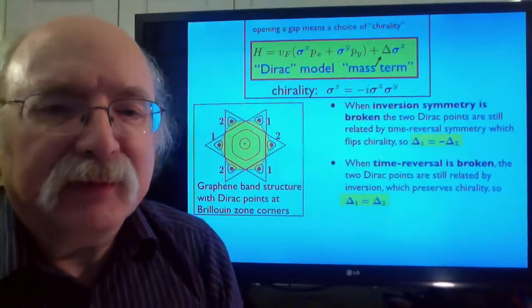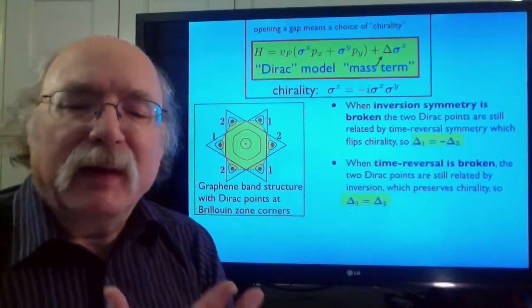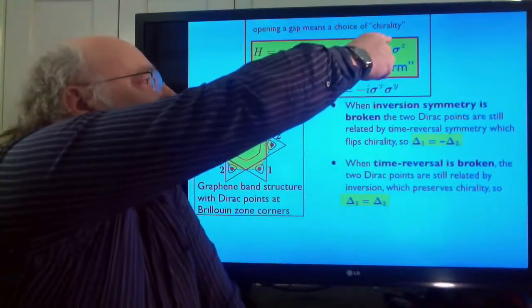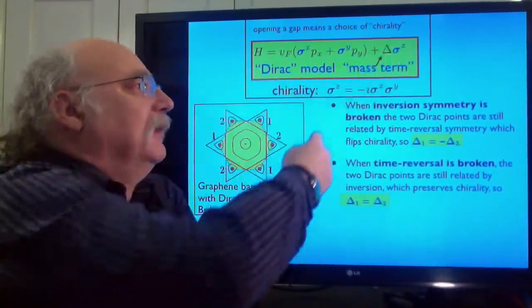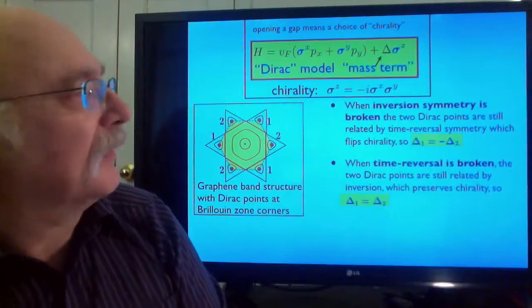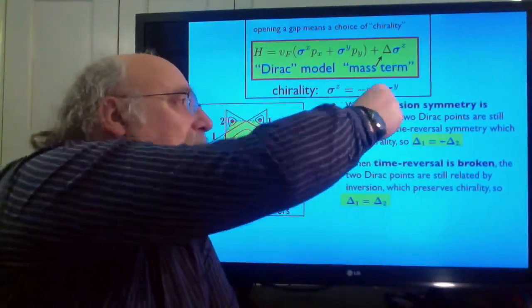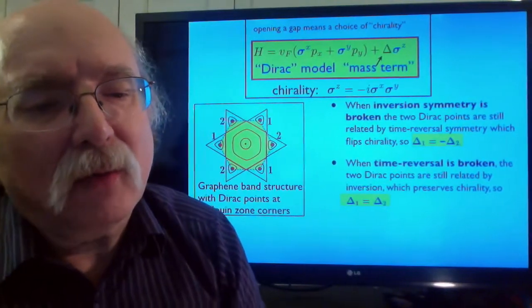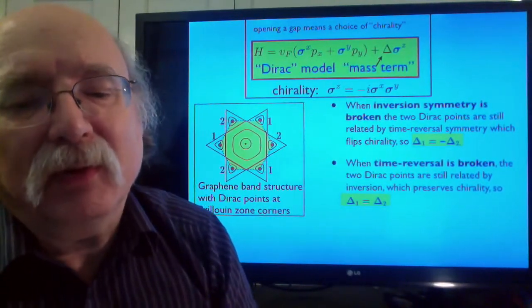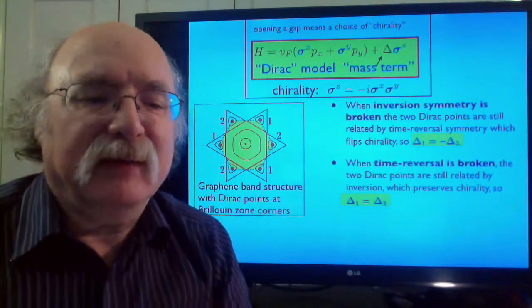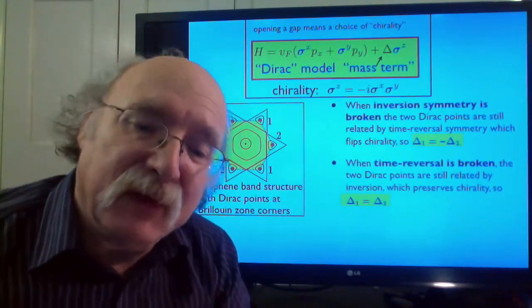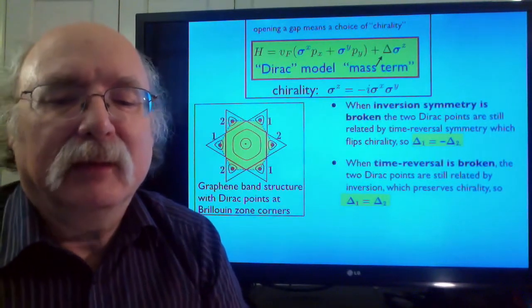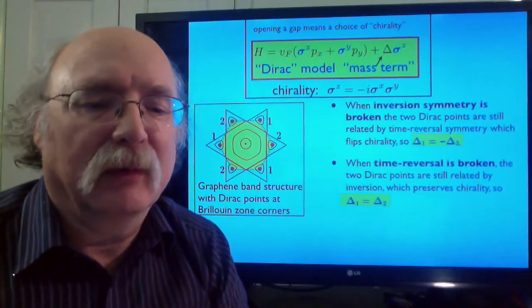When a gap opens, the Dirac points are now modeled by a massive Dirac equation. A key point is that the mass term in the Dirac equation, the sigma z term, is chiral which means it has a handedness. It depends on the relative handedness of x plus iy. When inversion symmetry is broken, the two Dirac points are still related by time reversal symmetry, which reverses the handedness. So the masses of the two Dirac points in that case have opposite signs, and there's no net chirality in the problem.